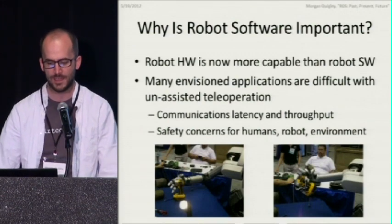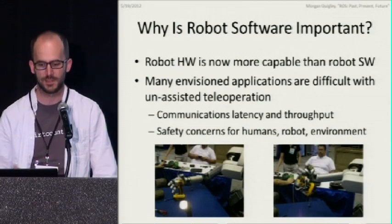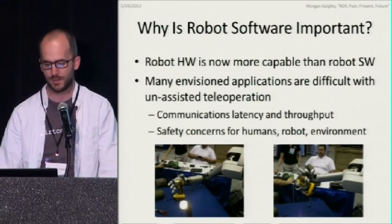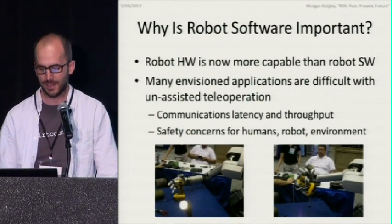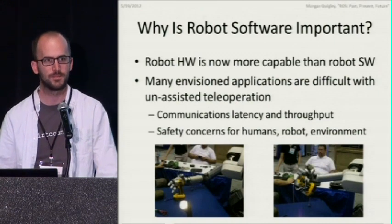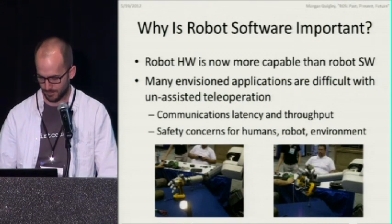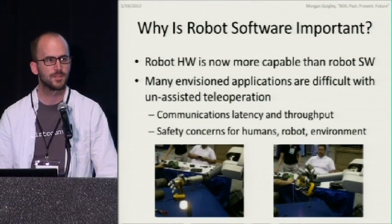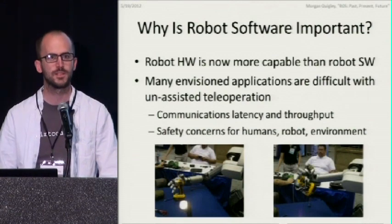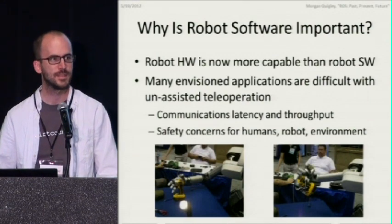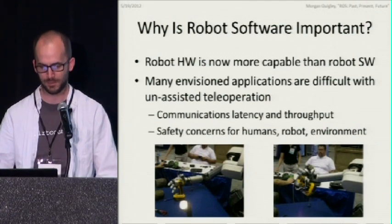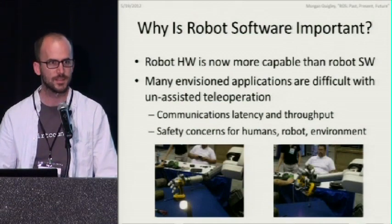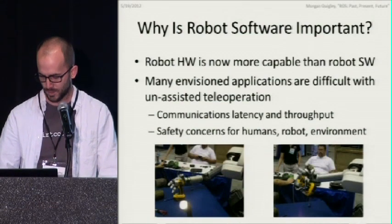Even with teleoperation, a lot of the applications we look to as roboticists are going to be tough without fully autonomous software. If we want to do elder care, for example, it's unlikely we'll have a gigabit Ethernet pipe to every home in the world — at least not imminently. So we have communications latency problems and throughput problems. And of course it's nice to be able to understand the environment enough to be intelligent and not hurt people, hurt robots, or crash into things. To do all that requires some reasoning and knowledge about what's going on in the world around you, which means lots of software.